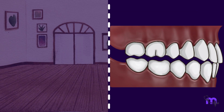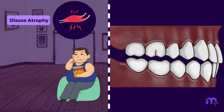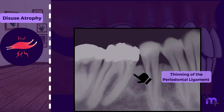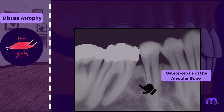In the case of John, not using the muscles resulted in a condition called disuse atrophy. Similarly, insufficient occlusal forces also result in atrophic changes, such as thinning of the periodontal ligament, osteoporosis of the alveolar bone, and reduction in bone height.